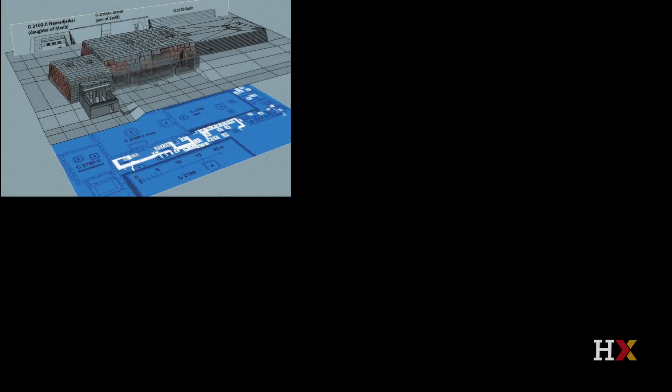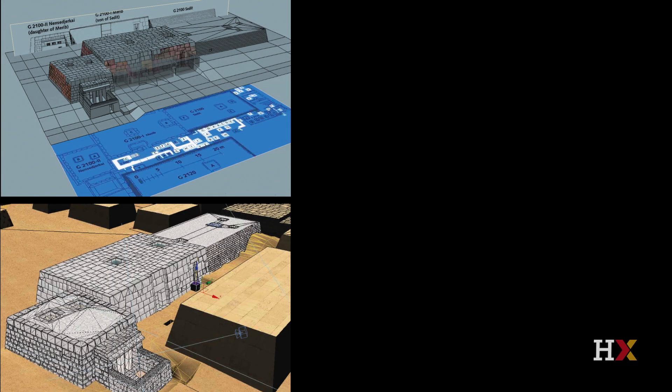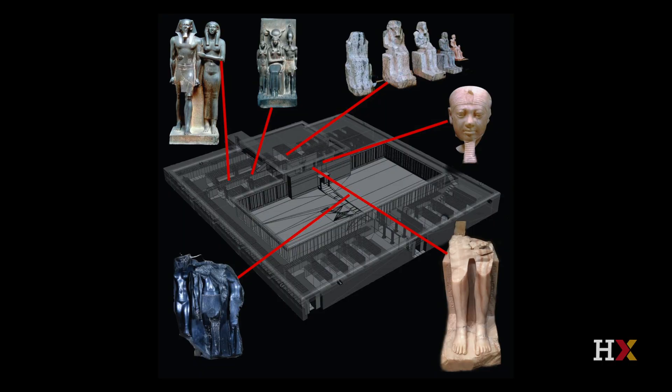That means starting with maps and plans and section drawings, and building up computer models in wireframes, then texture mapping them and adding different types of stone casing and other types of colors. Eventually we get a photorealistic appearance of these buildings. It also means we can repatriate or build 3D models of specific objects and put them right back into the rooms that they were originally found in.